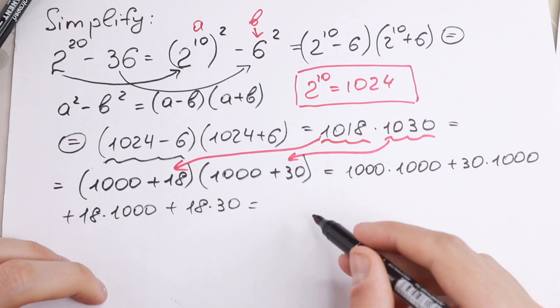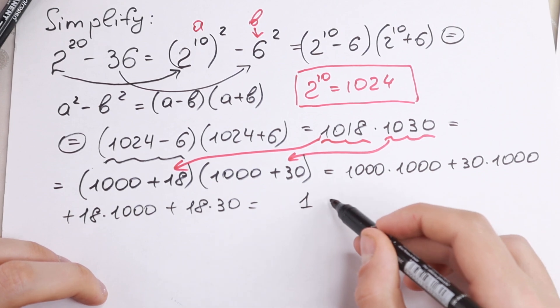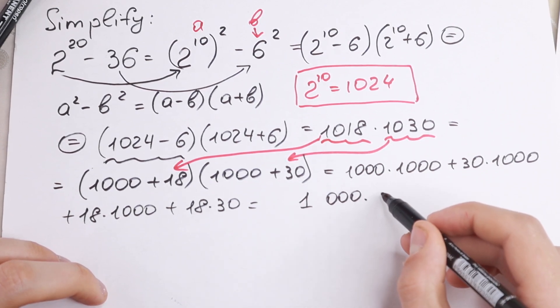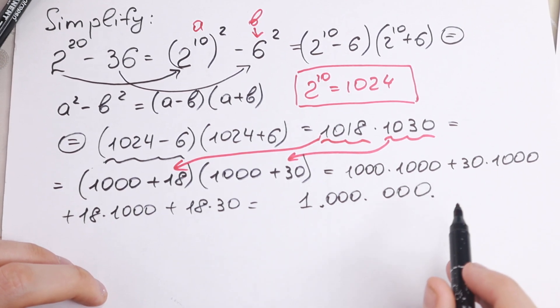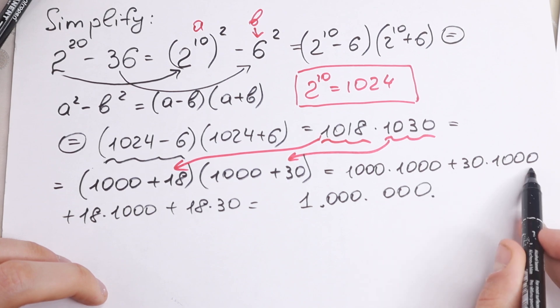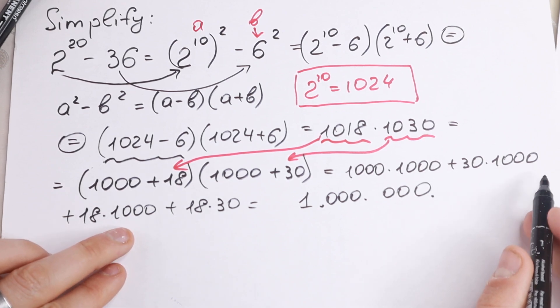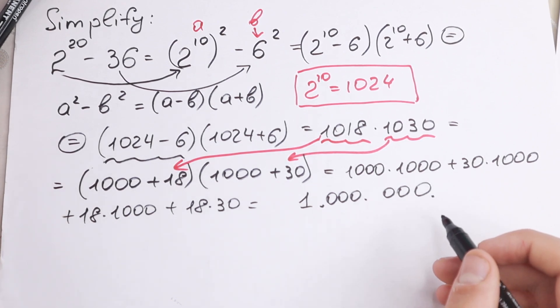But take a look. We will have a really interesting case, because 1000 times 1000, we all know this. I write it as one million. One thousand right here, one million. So I write it in that way. Take a look. 30 times 1000 will be 30,000 plus 18,000 will be 48,000.